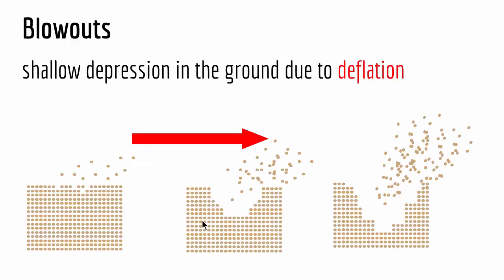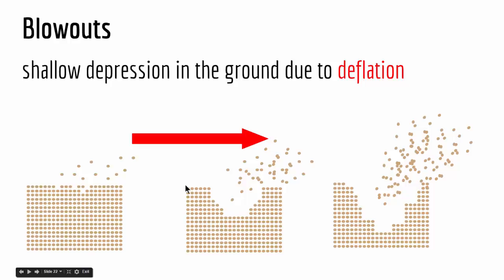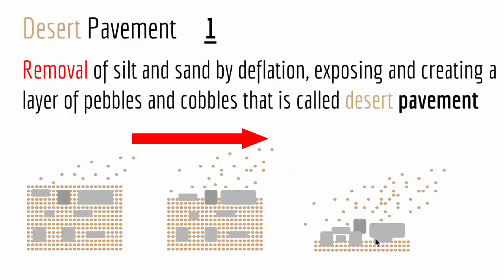We have two kinds of deflation: blowouts and desert pavements. Blowouts are shallow depressions in the ground due to deflation. If you have a shallow depression in an arid area that is due to wind, this is called a blowout. As you can see in this picture, it's basically a hole in the ground due to removal of material by wind. You have an area filled with sediment; slowly by the action of wind, some material is removed and it creates a large hole in the ground.